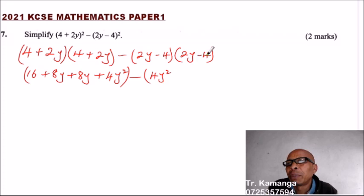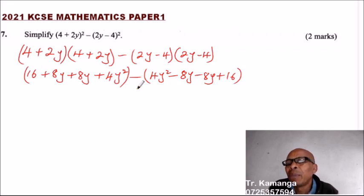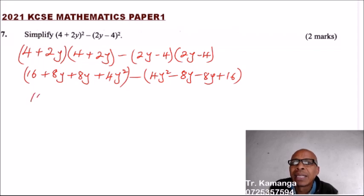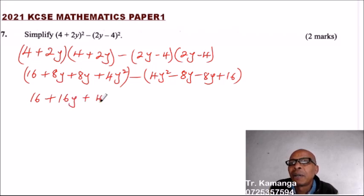Minus — putting the bracket there — 2y times 2y gives you 4y squared, then 2y multiplied by 4 is minus 8y, and minus 8y, and finally plus 16. So now these brackets are very important.